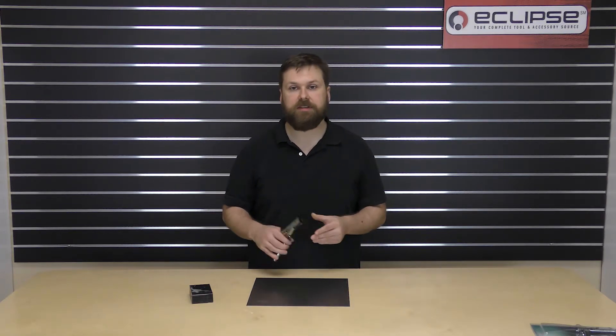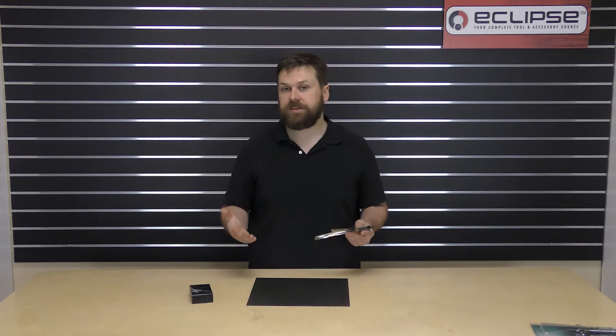Hello everyone. In today's quick guide I'm going to be showing you how to use the 900215 nibbling tool to cut straight circles or even irregular shapes in up to 18 gauge soft steels or 1/16 inch aluminum, copper, or plastics.